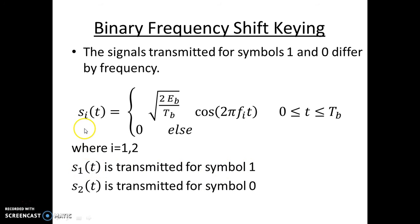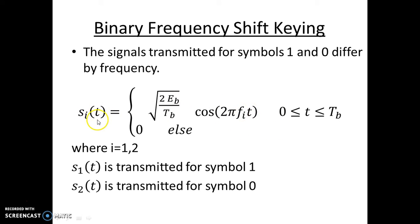Here, i can take on values one or two. If the incoming signal symbol is one, then i takes the value one — in that case we have s_1(t). If the incoming symbol is zero, then s_i(t) is s_2(t) and i takes the value two. So for s_1(t) you have frequency f_1 being transmitted, and for s_2(t) you have frequency f_2 being transmitted. You can clearly see that depending on the incoming signal — one or zero — the frequency is being shifted.